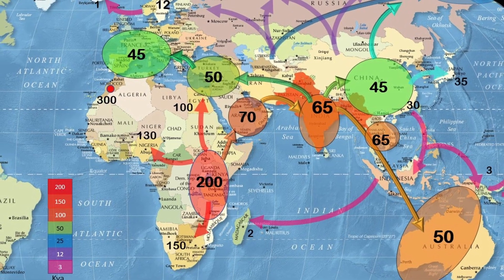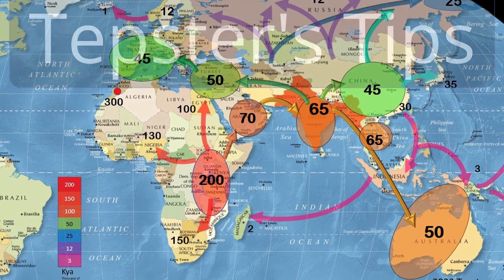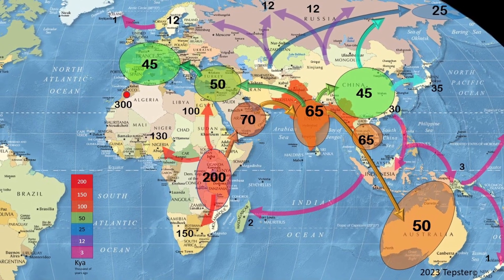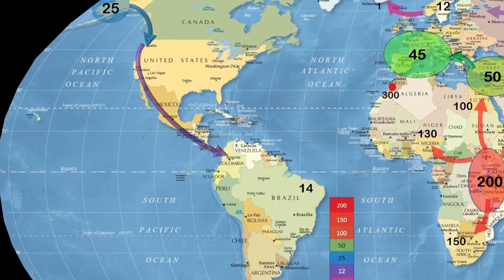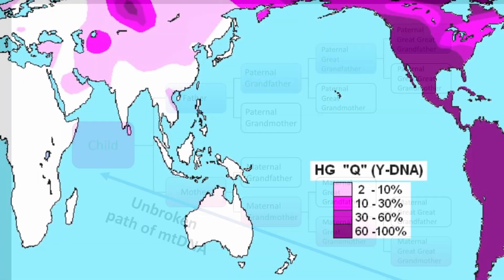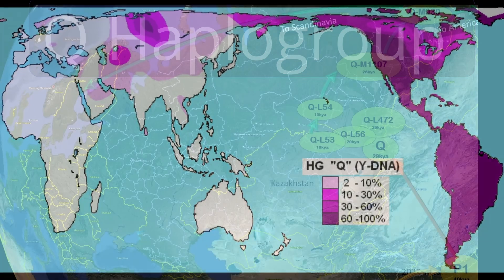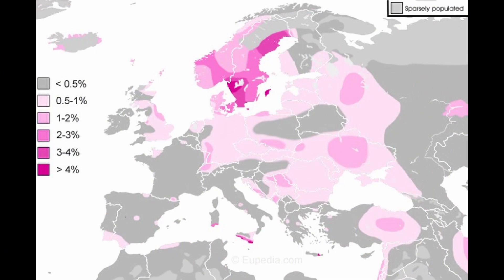In a previous episode of Tepsters Tips, we delved into the fascinating topic of human migrations out of Africa, examining the various paths taken by humans as they populated different regions of the world. Today, we'll take a closer look at the Q-HAPA group and the western migration route it followed to reach Scandinavia, eventually making its way to the United States.